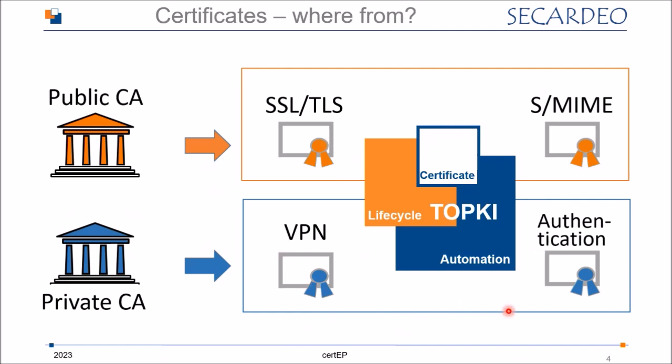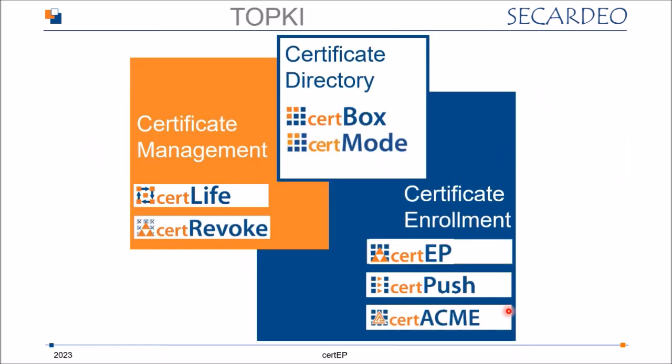TOPKEY stands for Trusted Open PKI, which handles all phases of certificate lifecycle automation. TOPKEY is a modular platform. Starting with 30P, which is the topic of today, 30P serves for Windows and device auto-enrollment. Then we have CertPUSH for the provisioning of S/MIME certificates to mobile devices.